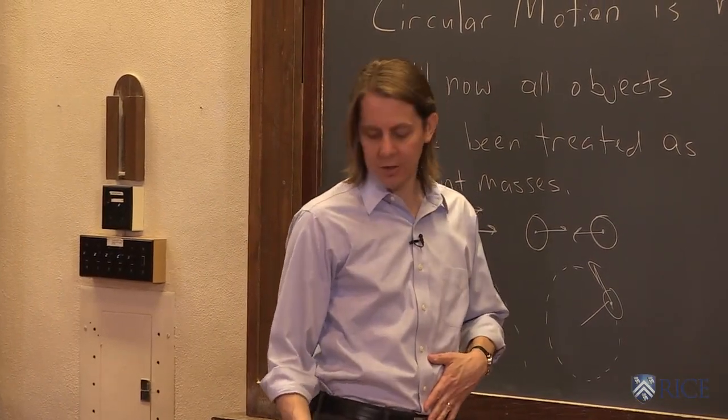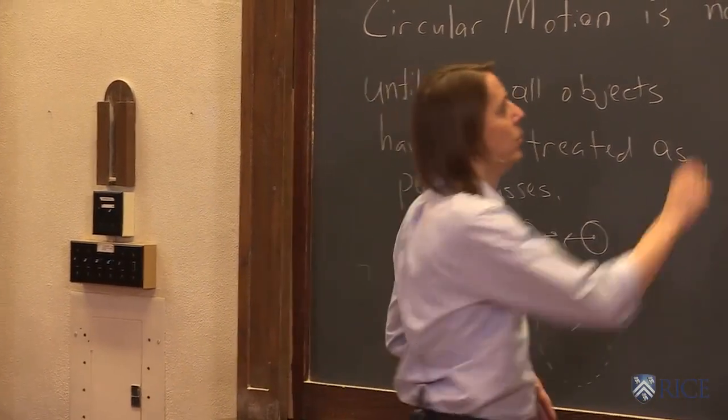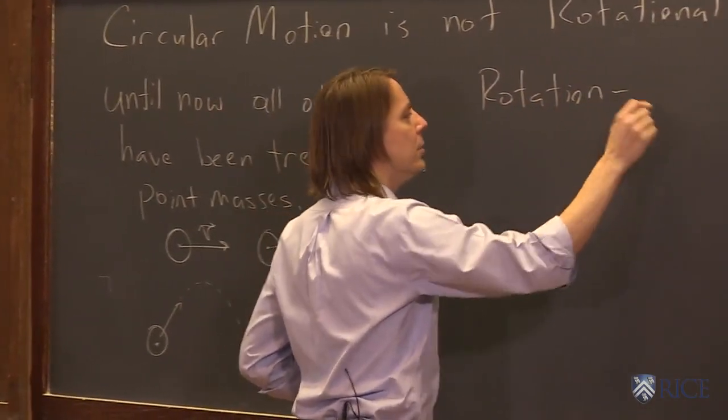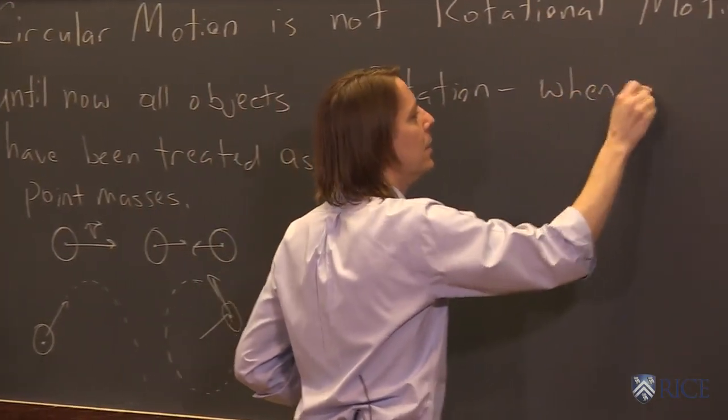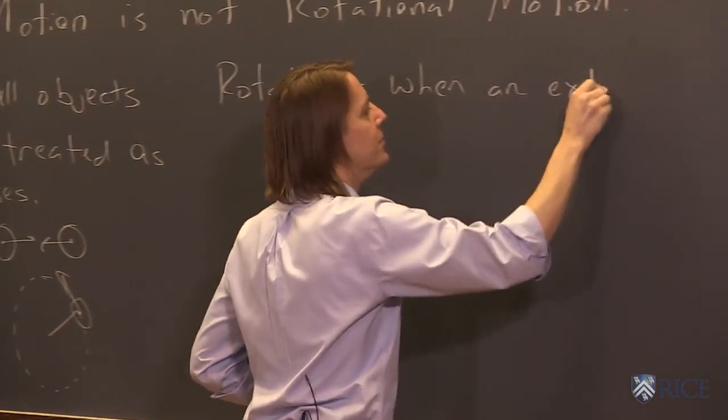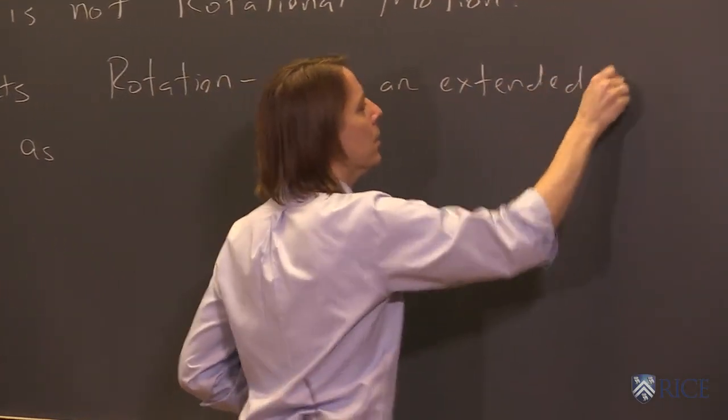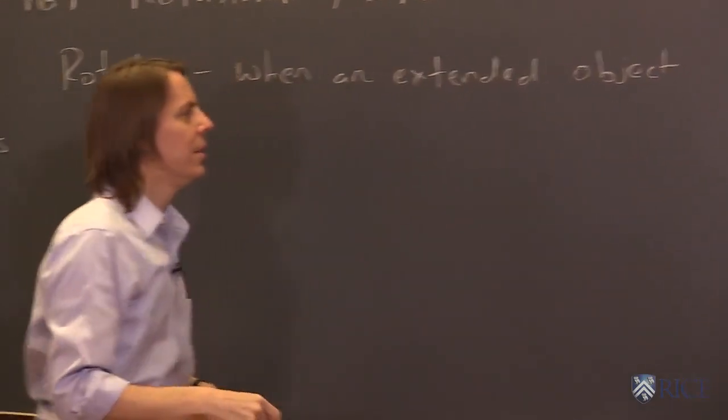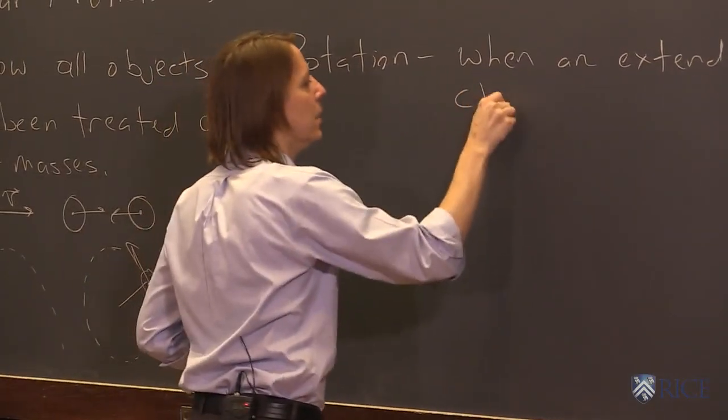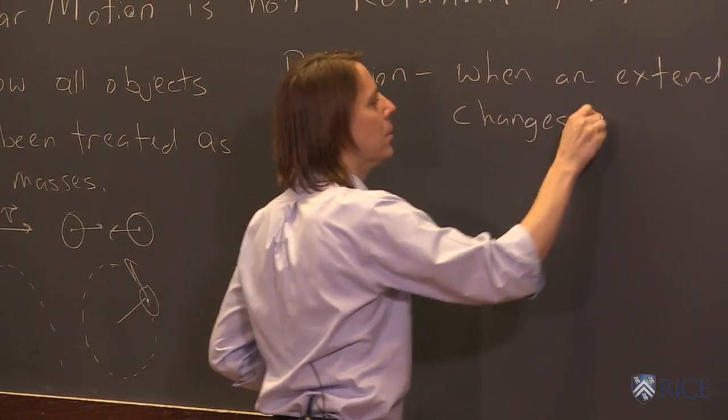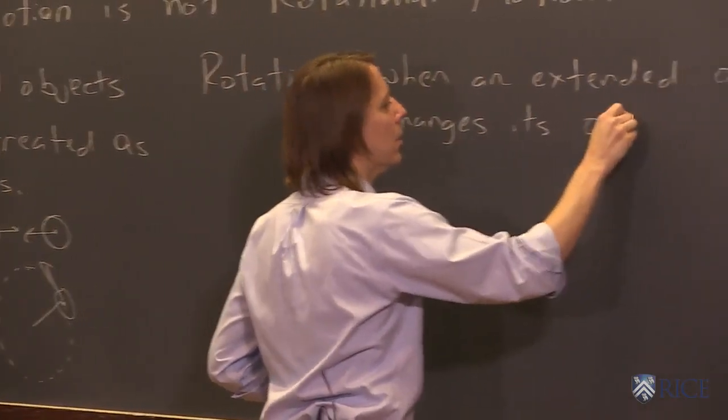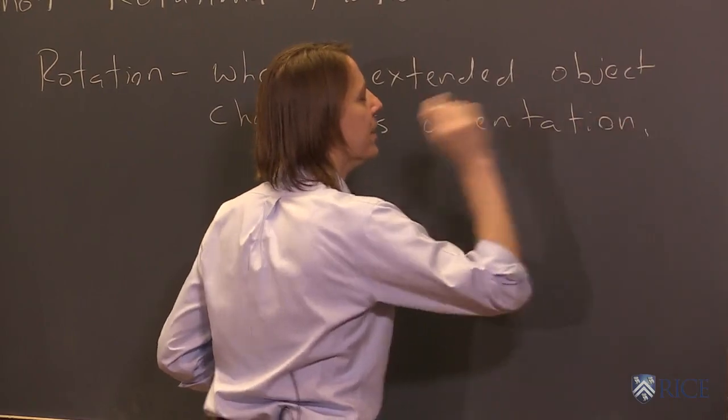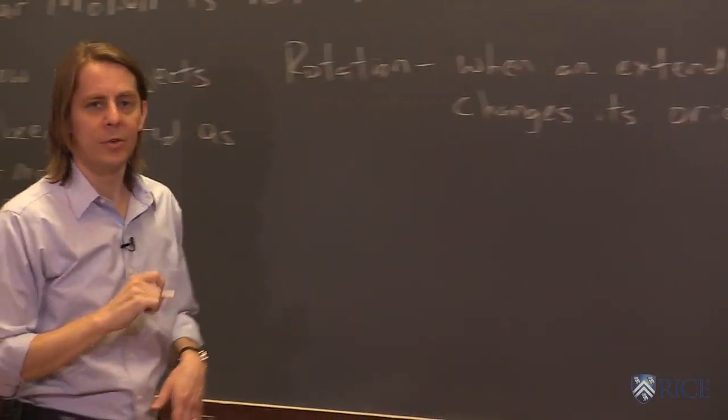So, let's look at what does rotation really mean. Rotation, really, is when an extended object, something with a size and a shape, changes its orientation. Then suddenly you can't treat it as a point mass anymore.